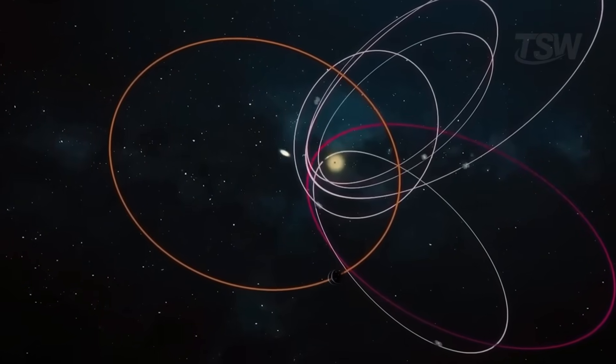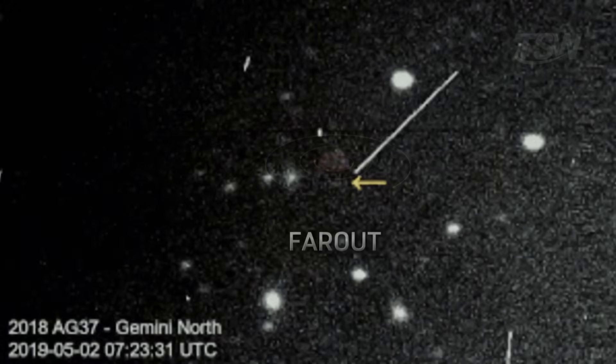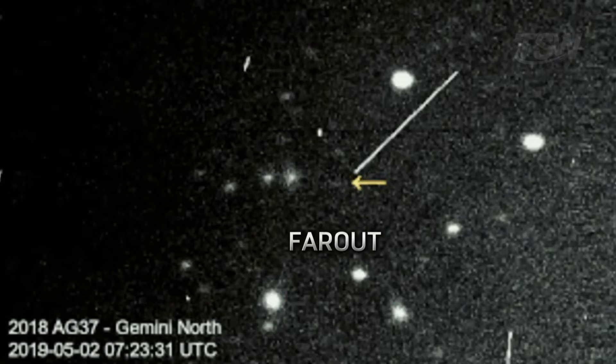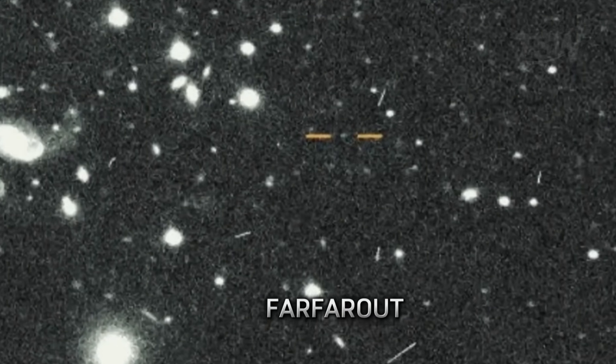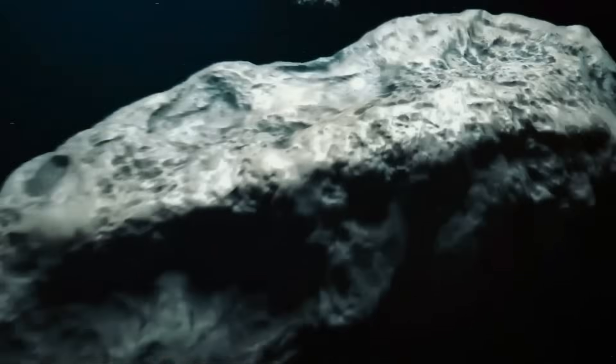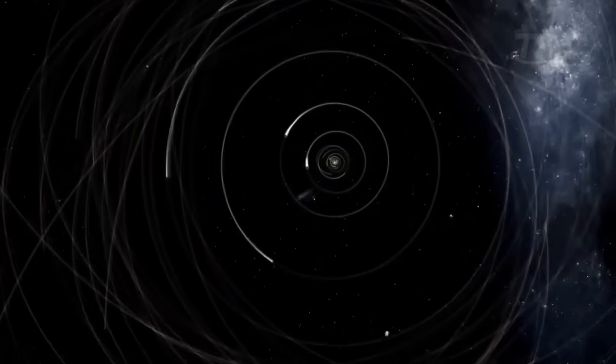Meanwhile, new discoveries keep expanding our horizons. In 2018, astronomers found a body nicknamed Farout, located 120 times farther from the Sun than Earth. And soon after came Farfarout, an almost ironic name for the most distant object ever detected, reinforcing the idea that the solar system is far more extensive than we once thought.